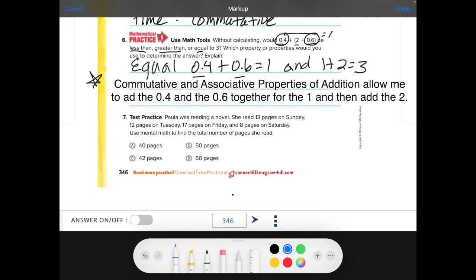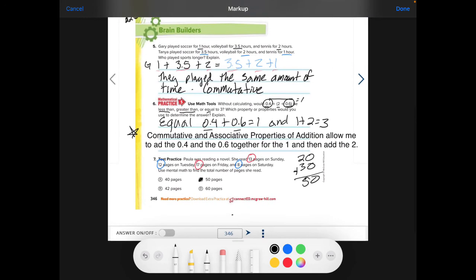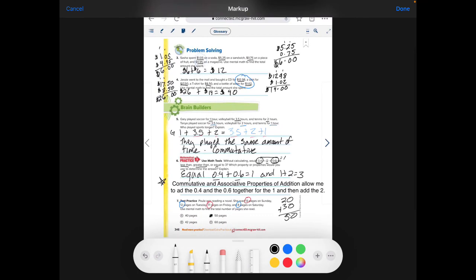Number seven. Paula was reading a novel. She read 13 pages on Sunday, 12 on Tuesday, 17 on Friday, 8 on Saturday. Use mental math to find the total number of pages she read. So I'm going to look at this and say, it's going to be easy for my head to add these two numbers together. And I know that 12 plus 8 is going to be 20. Then I can add easily maybe this number and this number together because that's going to be about 30. And then those together are going to add up to 50. And that helps me do that. So the associative and the commutative property help me associate and add those together well.